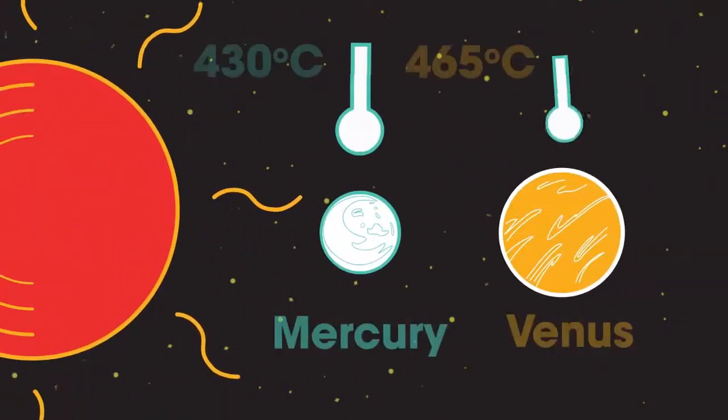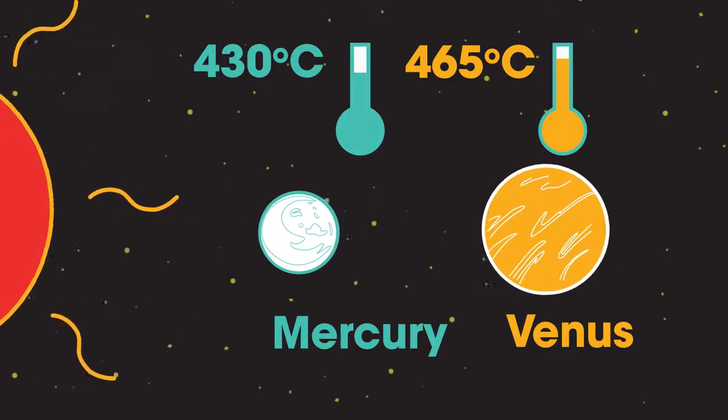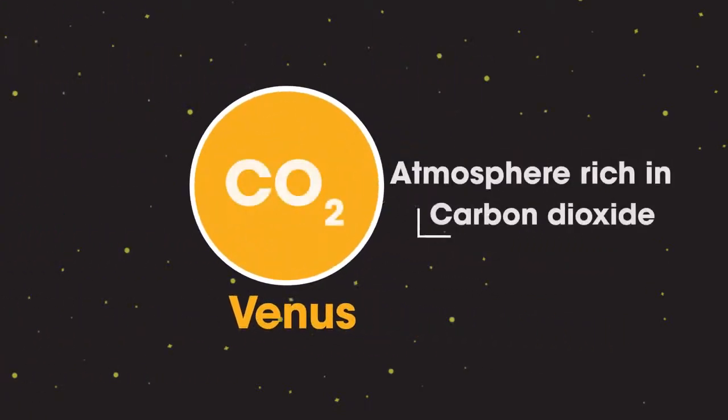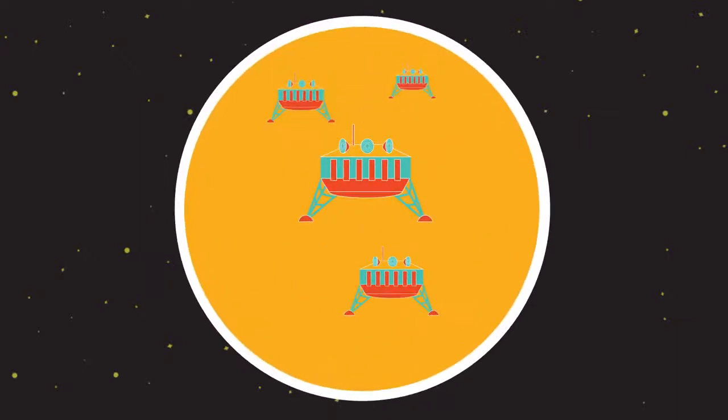The warmest planet, if you checked, is Venus, not Mercury. Although it's much further away from the Sun than Mercury, it has an atmosphere very rich in carbon dioxide, which has resulted in a very effective greenhouse effect. Few probes sent to the surface of Venus have survived for more than a few hours in the hot and corrosive atmosphere.